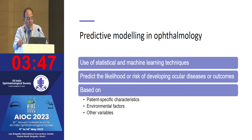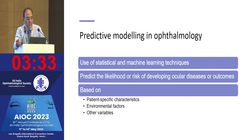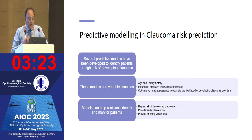Predictive modeling uses statistical and machine learning techniques to predict the likelihood or risk of developing ocular disease or its outcomes, based on patient-specific characteristics, environmental factors, and other variables. Several predictive models have been developed to identify patients at high risk of developing glaucoma.